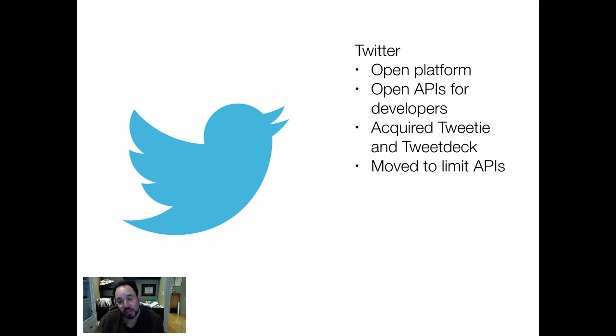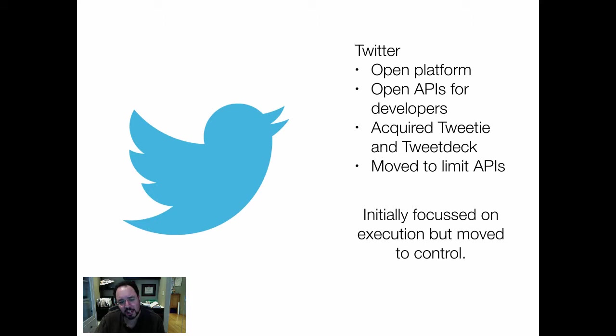Basically, you can only have 100,000 API calls, and after that, Twitter pretty much controls you. Twitter initially focused on execution — just being a better place for people to devote their attention — but moved subsequently to control. The reason it did that is it felt it had to control these things in order to eventually work out how to monetize the platform. In other words, it hadn't really thought through that very well. The problem with that transition is that it obviously riled a lot of people.